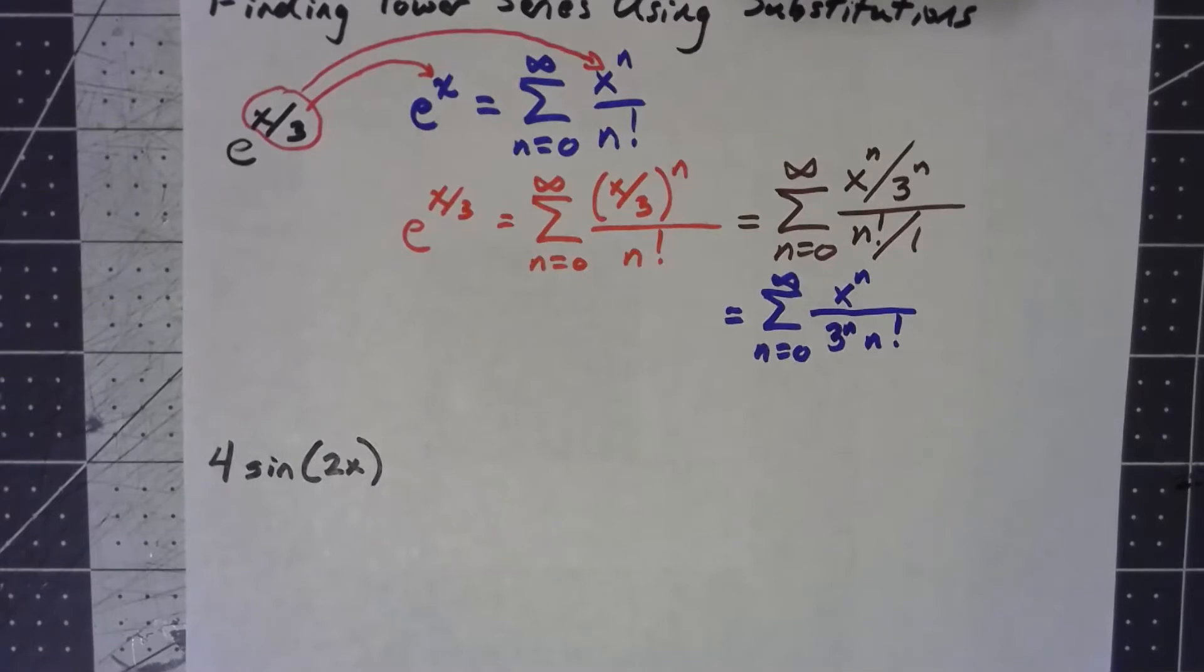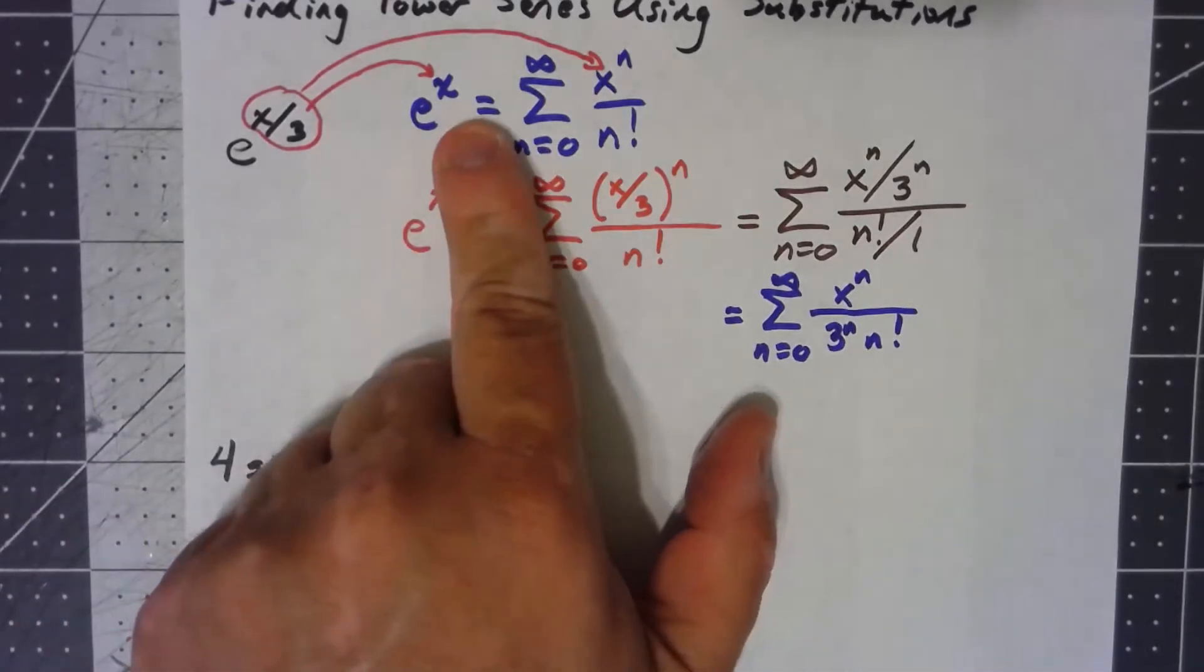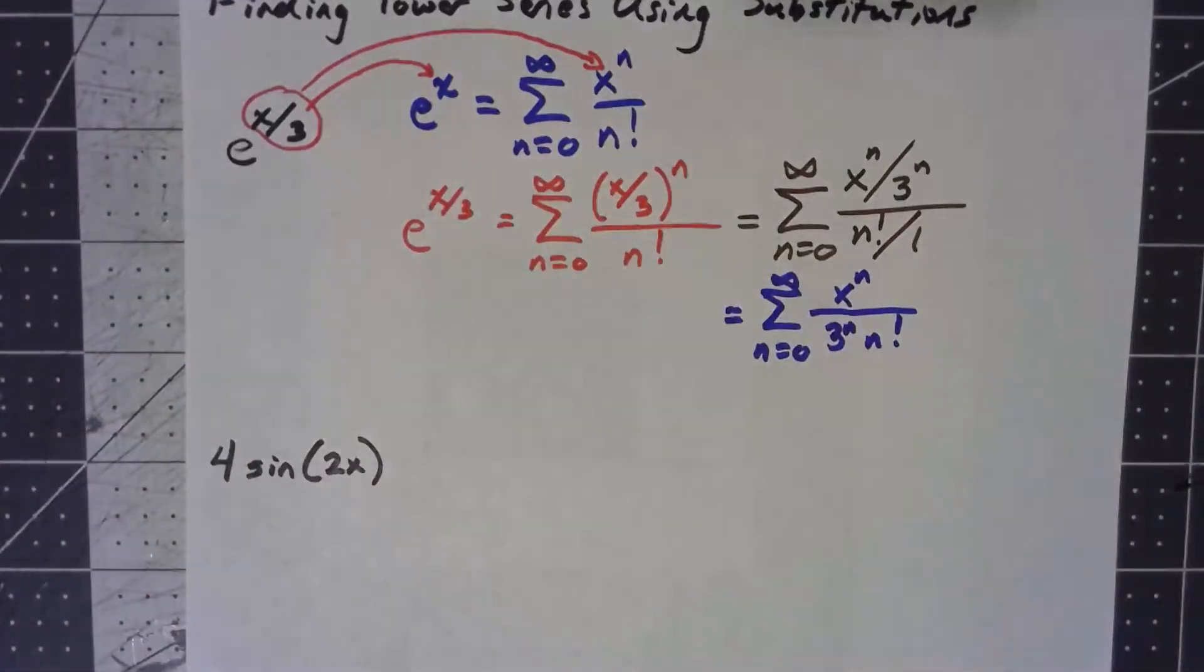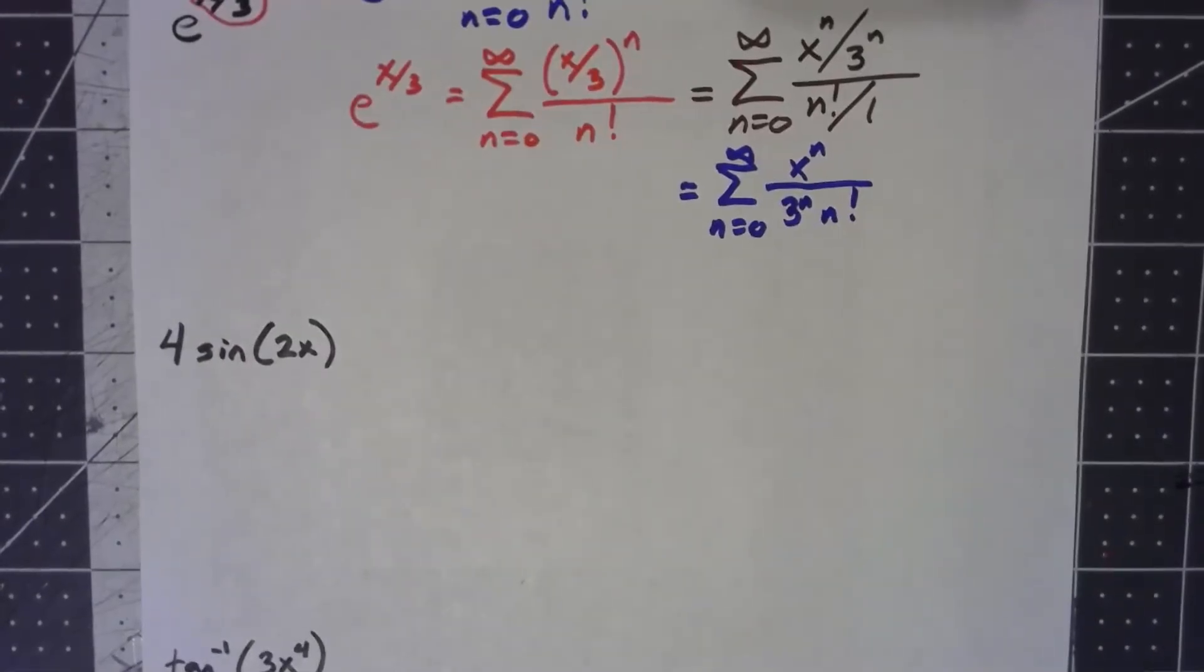And there we go. There's a power series for e to the x over 3. All I had to do was plug that x over 3 in for the x, simplify down what I had. Let's do a couple more here.